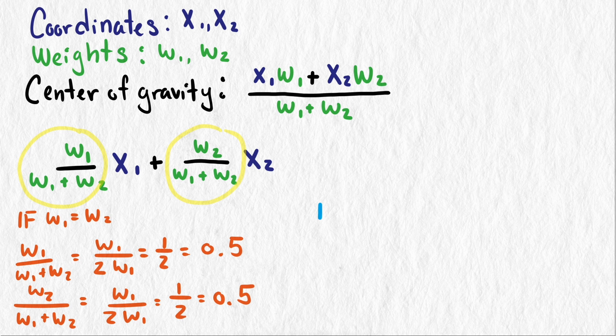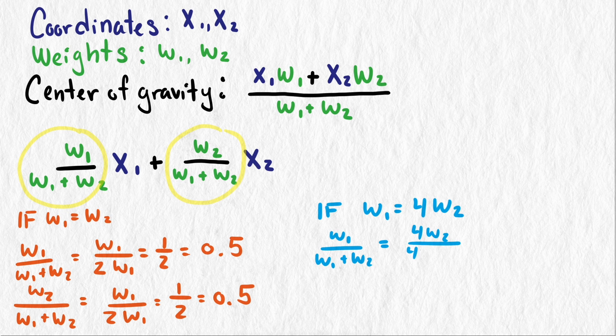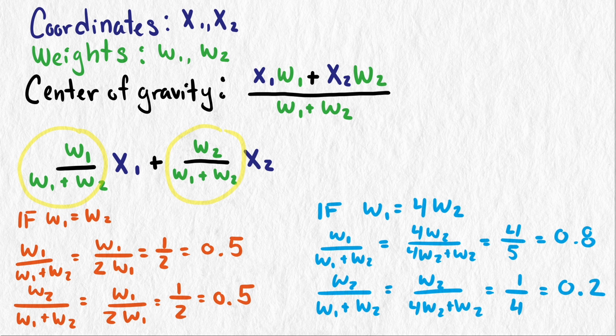If they are both the same weight, both of these expressions multiplying the coordinates are 0.5. If one is 4 times the other, then one is 1 fifth and the other is 4 fifths, or 0.2 and 0.8. Now we can see why the center of gravity of two weights of 4 and 1 is 1 fifth of the way from the heavier weight along the line between the two centers.